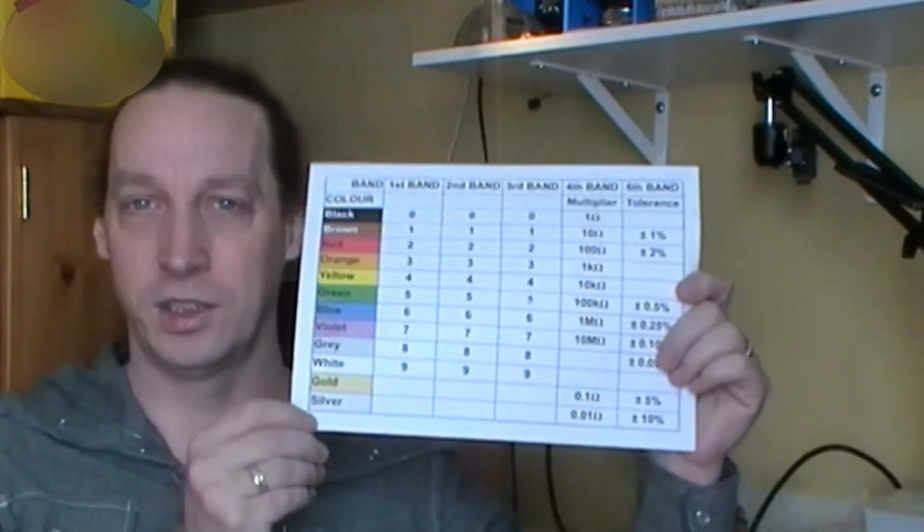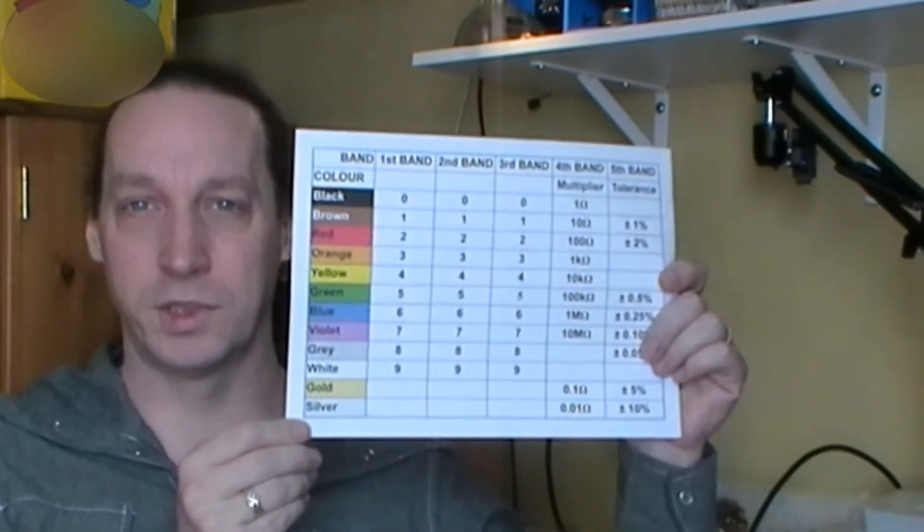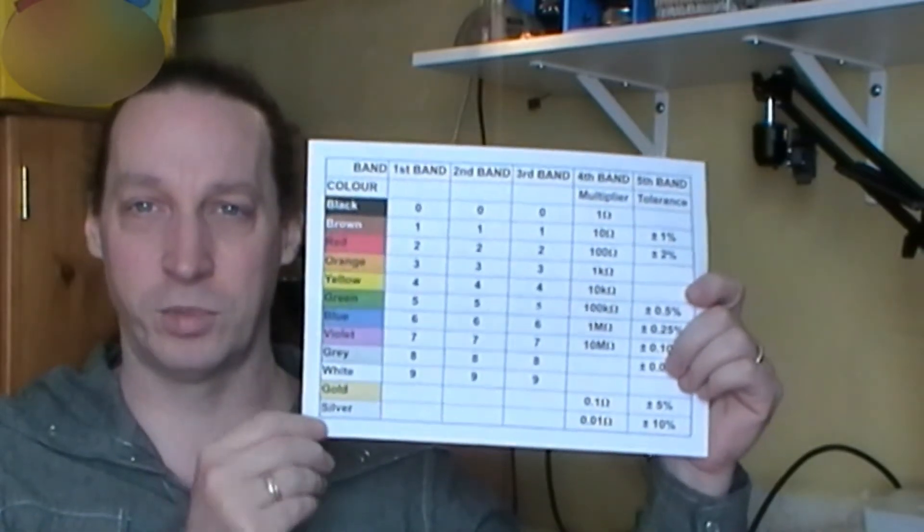So put it on the wall and keep it there at all times. You can get these charts off the internet. Look on the internet anywhere, put a search in, resistor colour code chart. You'll find them all over the place. Lots of different websites and companies do them. You can even buy nice glossy ones. This particular one I did on a desktop publishing suite. So that was quite simple. You could do it on a spreadsheet if you like. Get them off the internet. Print them off. Put them on your wall. No problem. Learn the colours.